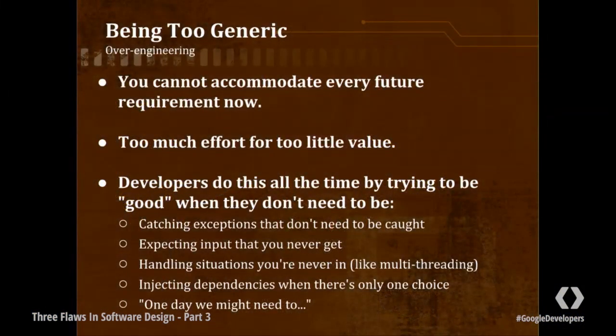Or dependency injection, when there's only one choice that there could ever be. This is probably most common in the Java world, because dependency injection is very popular. I'm not saying that dependency injection is bad, but dependency injection when you don't need it is bad. You shouldn't be doing speculative dependency injection. You shouldn't be guessing, "well, in the future we might need to do dependency injection, so I should just do it now." In general, these can all be summed up as: one day we might need to do foo, so I should do foo now.